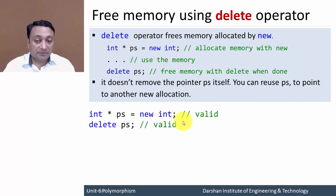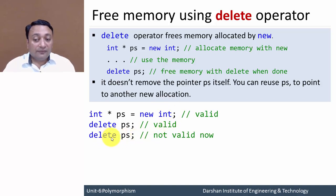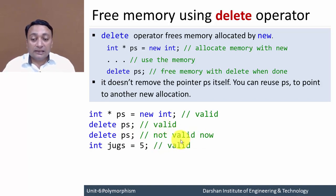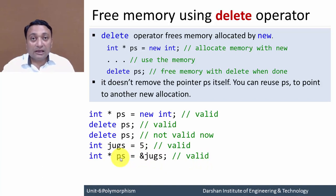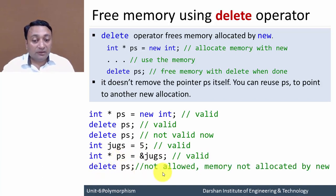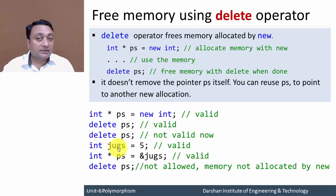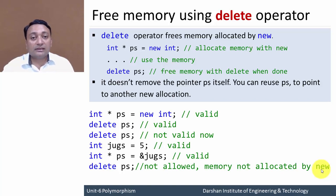The delete operator deletes dynamically allocated memory but does not de-allocate the pointer variable itself. For example: allocating memory is valid; writing delete ps deletes the new-allocated memory block; writing that statement again is valid. However, applying ps after deletion is not valid because that block is already deleted. If I declare a regular variable jugs with value 5 and assign its address to ps, that is valid. But applying delete ps there is invalid because ps is not holding an address allocated by new — it holds the address of jugs. Memory not allocated by new cannot be deleted with delete.